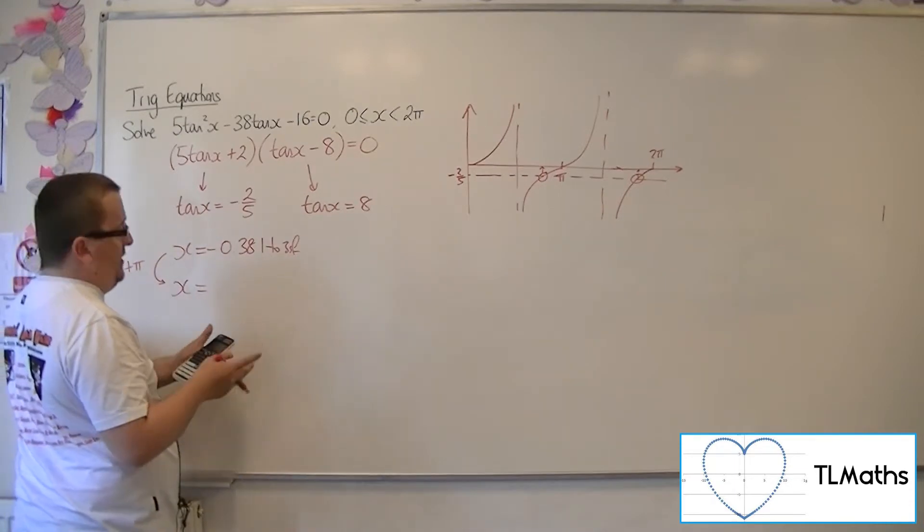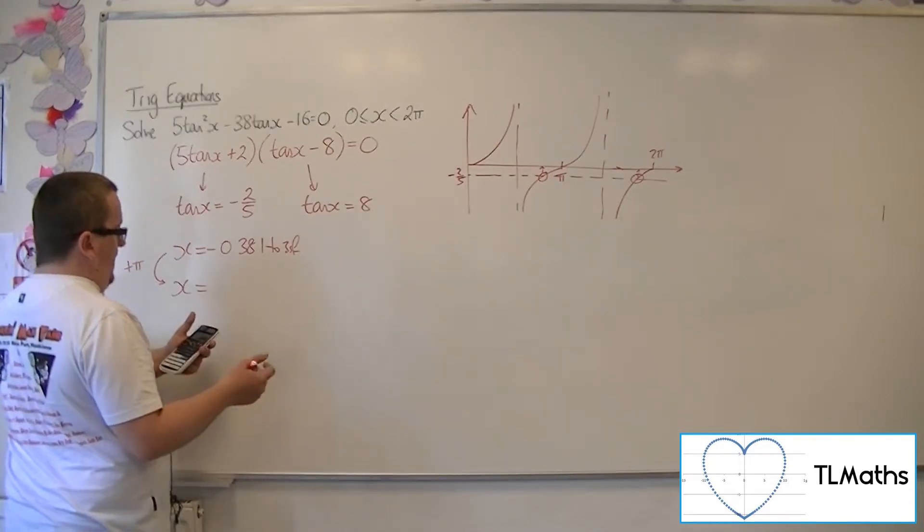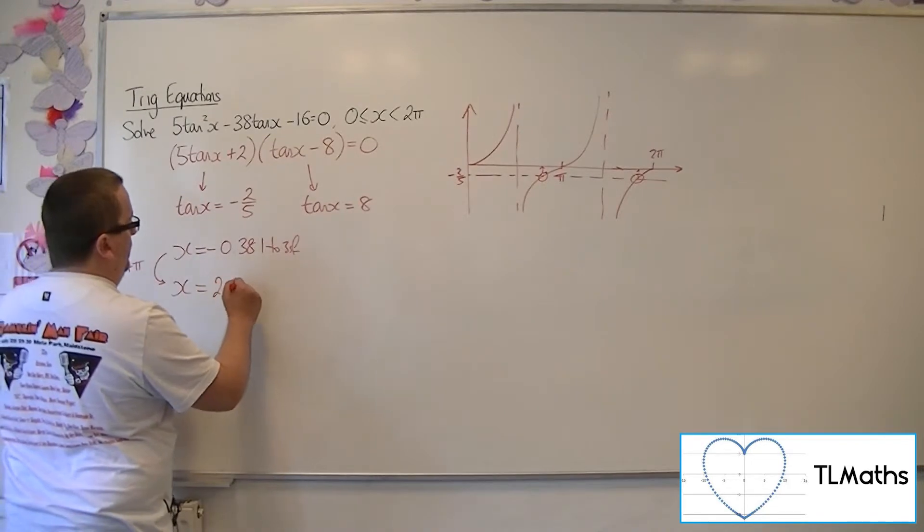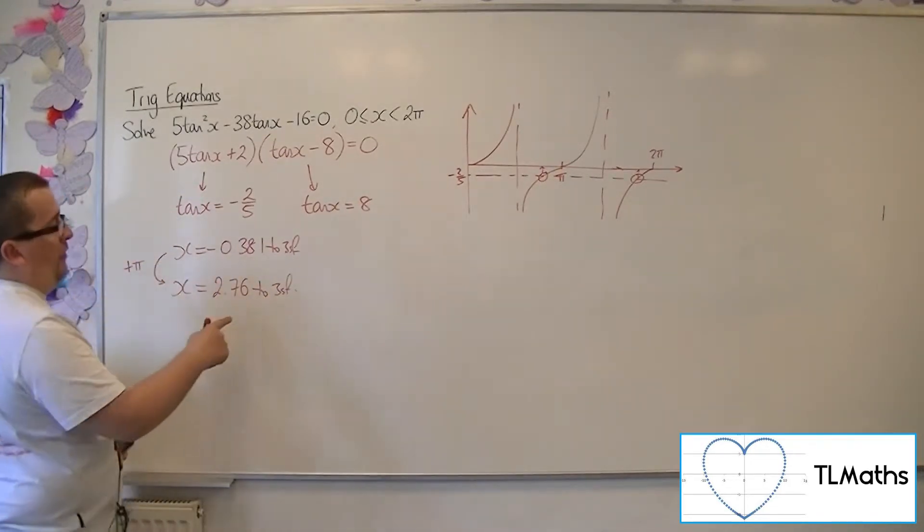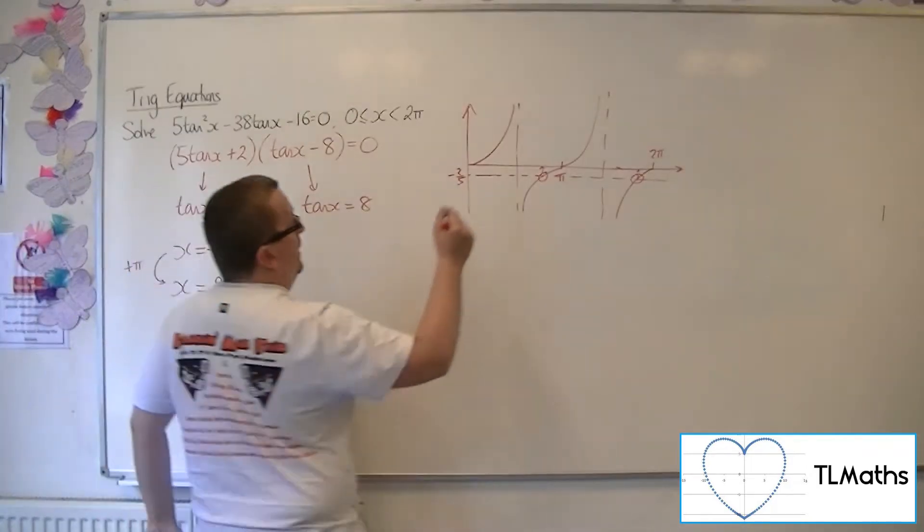I have a period of tan to get to 2.76. So that is between 0 and 2 pi. So that's my first solution. That's this one here.